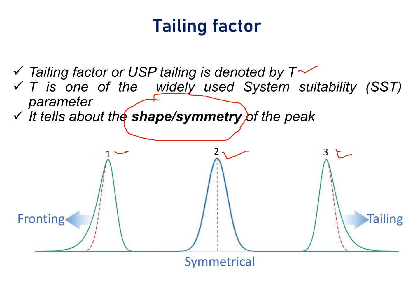In peak 1, there is a deformity from the front side of the peak. If such a phenomenon occurs, it is said that there is fronting in the peak. In peak 3, there is a deformity from the tail of the peak.